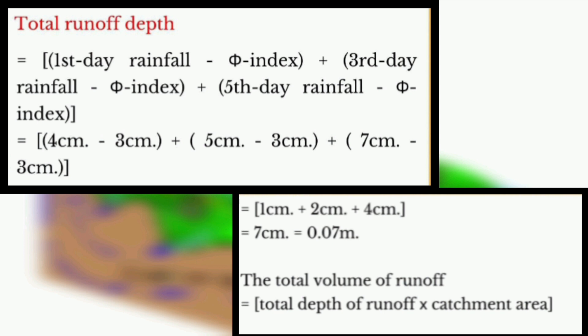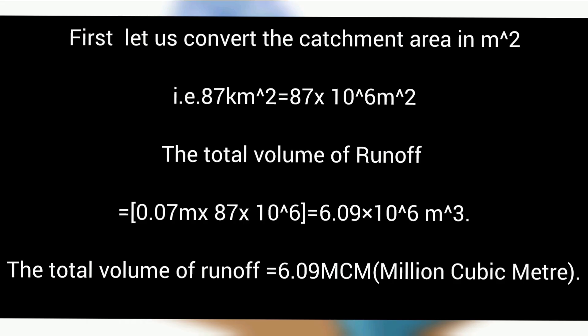Now we need to convert the catchment area to meter squared. 87 kilometer squared equals 87 times 10 to the power 6 meter squared. The total volume of runoff equals 0.07 meters times 87 times 10 to the power 6, which is 6.09 times 10 to the power 6 meter cubed. The total volume of runoff is 6.09 MCM, which is million cubic meter.